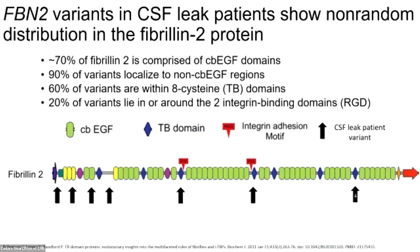Interestingly, the fibrillin 2 variants we saw in patients did not exhibit a random distribution. Within fibrillin 2, about 70% of the protein is comprised of calcium-binding EGF domains, indicated by the green rectangles. However, about 90% of our patients' rare variants fell outside of those domains — 60% lie within 8-cysteine or TB domains (the blue diamonds), and 20% lie in or around the only two RGD domains of the protein, indicated by the red rectangles.